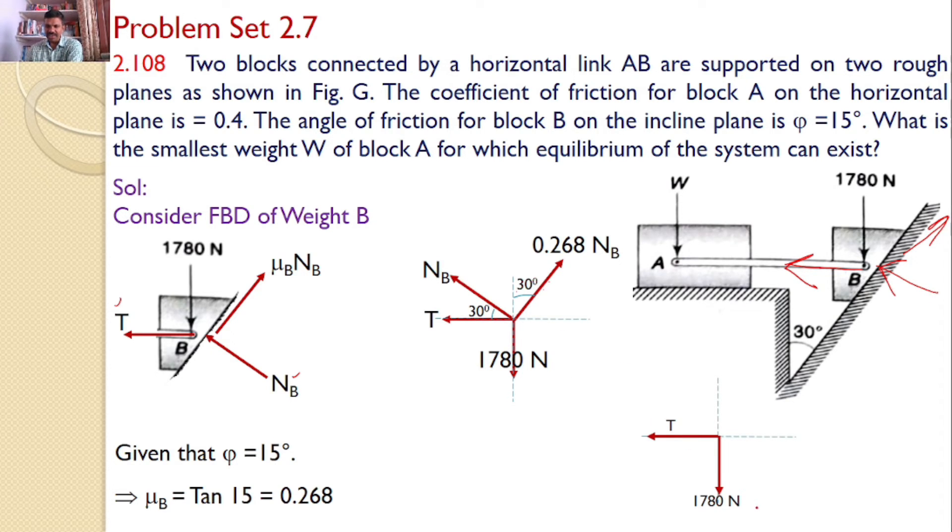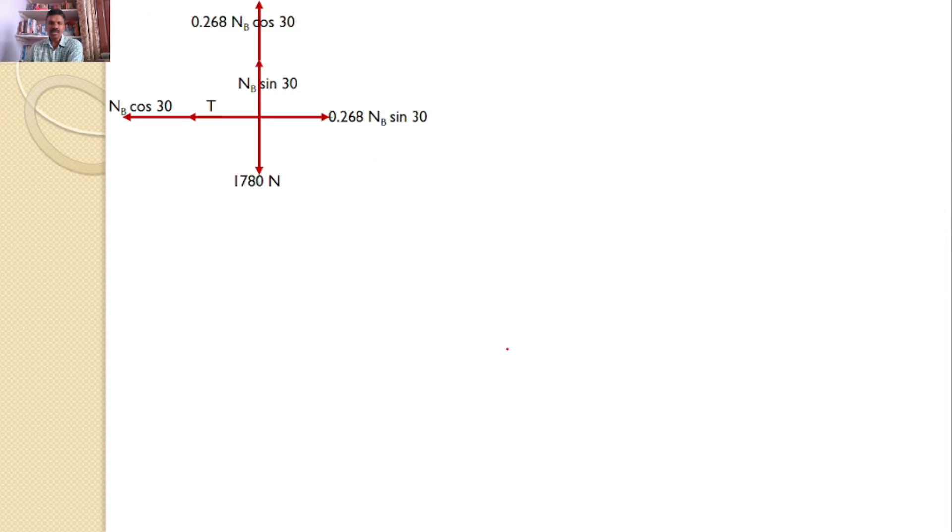Now, let us resolve all the forces along X-axis and Y-axis. Now, 1780 is a vertical force, T is a horizontal force. NB makes an angle 30 with the horizontal, hence the horizontal component becomes NB cos 30, vertical component becomes NB sin 30. And 0.268 NB makes an angle 30 with the vertical, hence the horizontal component becomes 0.268 NB sin 30, and the vertical component 0.268 NB cos 30.